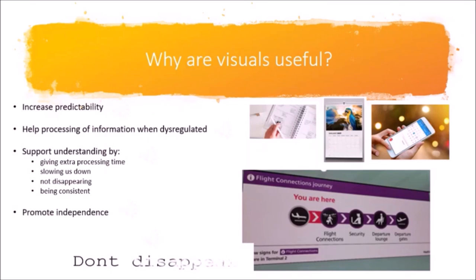When using visuals, we are always trying to promote independence. For some, independence might be following a visual schedule to complete a task. For others, it might be using visuals to learn a new skill, for example getting dressed. And for others, it can be using visuals to practice planning and organization — for example, problem solving to get themselves organized for school independently. We want to use visuals to help autistic individuals take an active role in their lives in whatever way is appropriate given their age and developmental level.